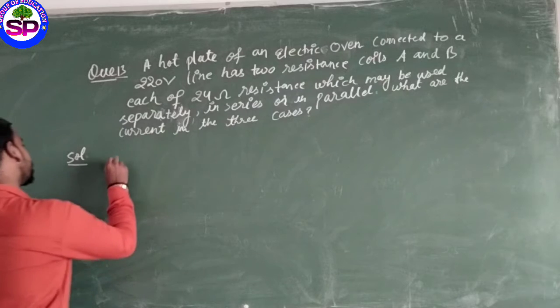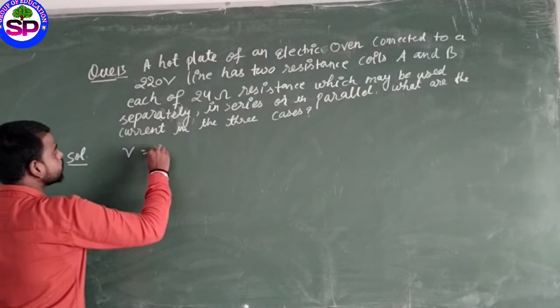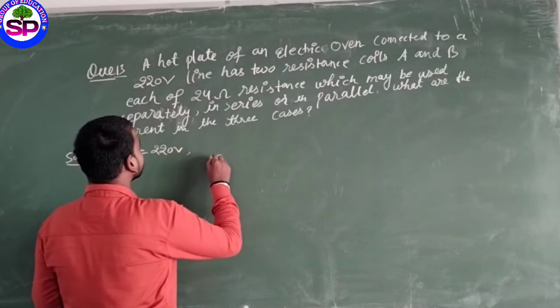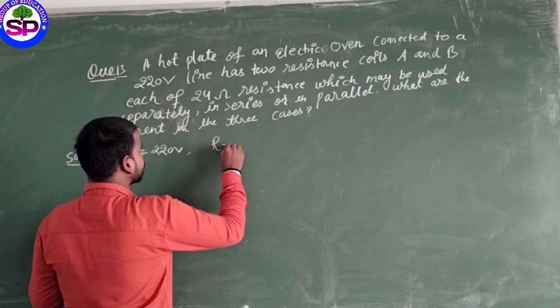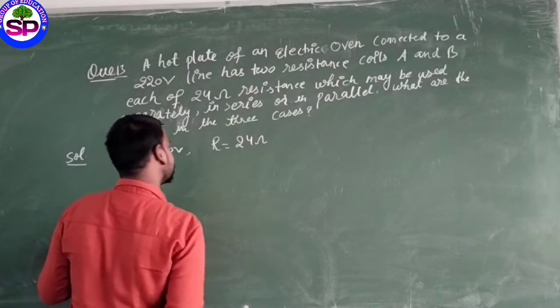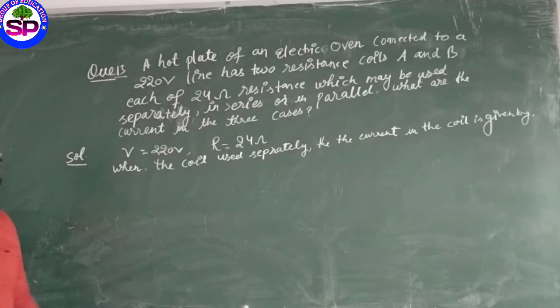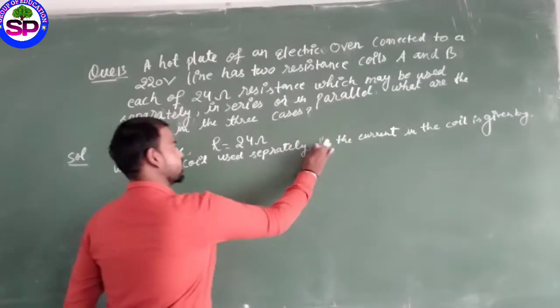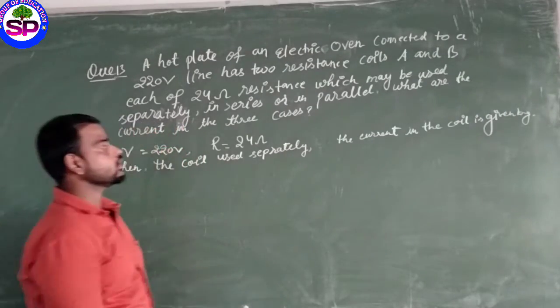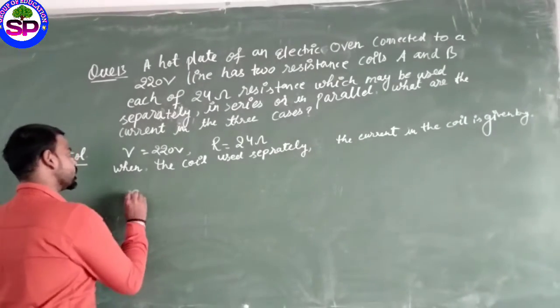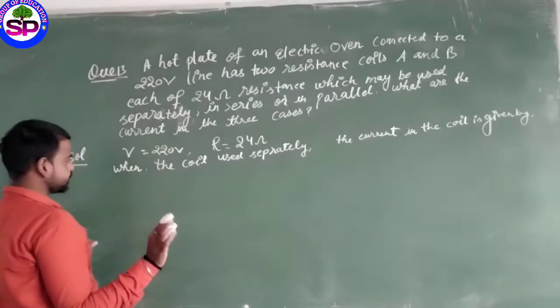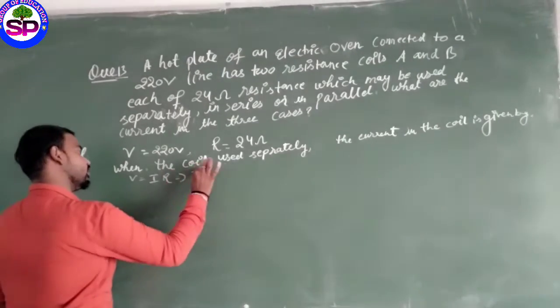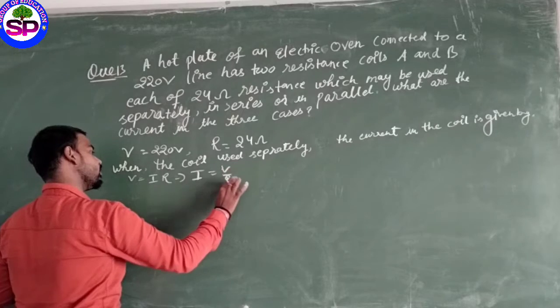Potential difference V is equal to 220 volt and R is 24 ohm. When the coil is used separately, the current in the coil is given by V equals IR.